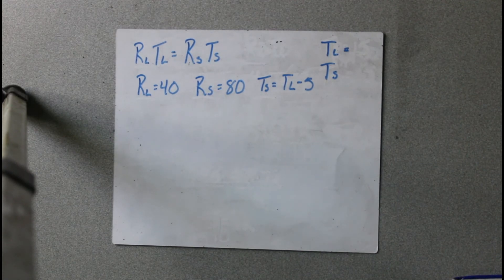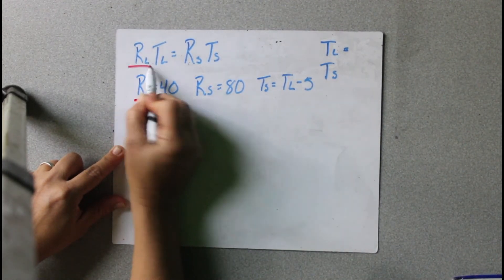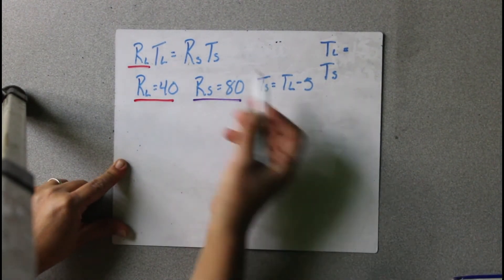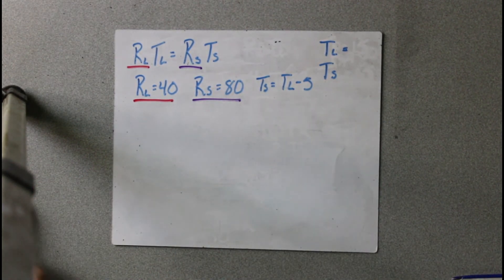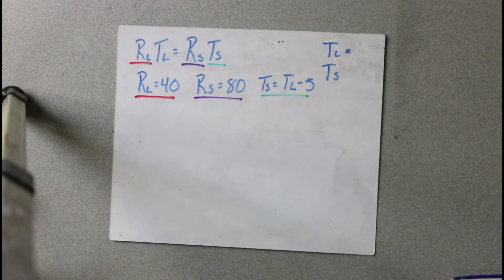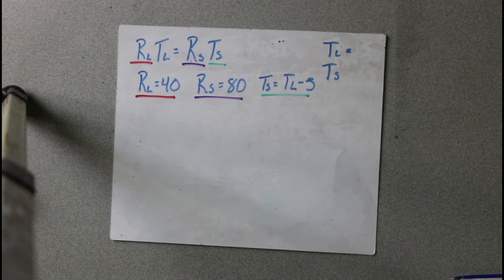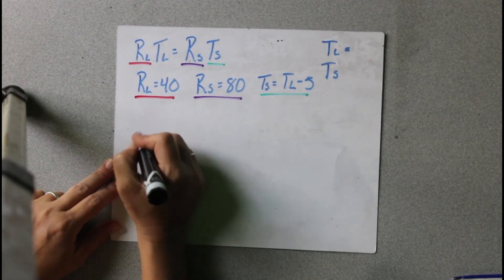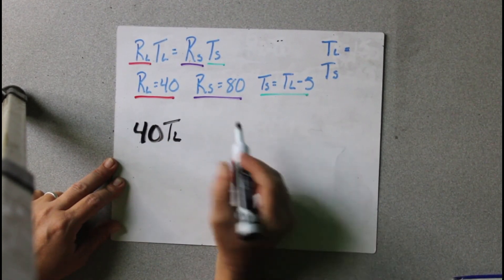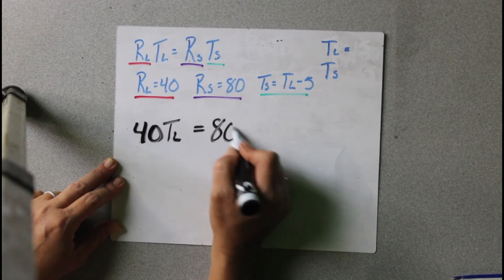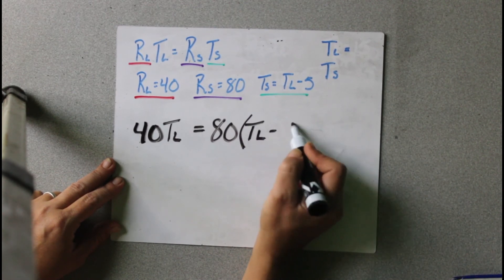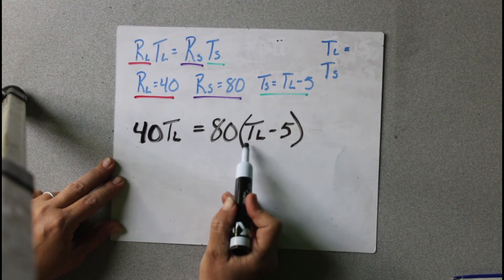Let's look at our values. RL is there, RS is there, and TS is there. So we just substitute those values in. RL, which is 40, times TL equals RS, which is 80, times TS. And TS is TL minus 5. Now you see how our only variable is TL — it's in two different places but it's still just one variable.